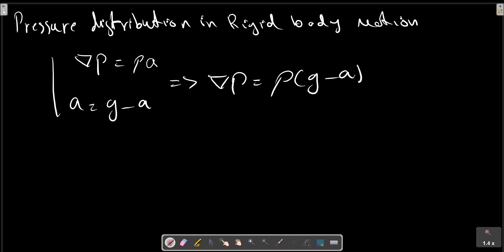The pressure gradient acts in the direction g minus a, and lines of constant pressure are perpendicular to this direction. The general case of combined translation and rotation of a rigid body is discussed in a later chapter.